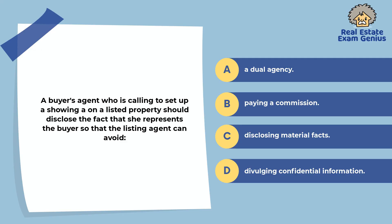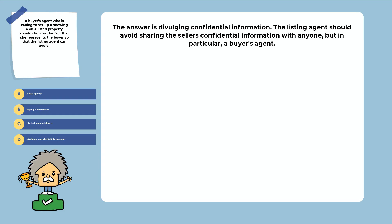A buyer's agent who is calling to set up a showing on a listed property should disclose the fact that she represents the buyer so that the listing agent can avoid: a dual agency, paying a commission, disclosing material facts, or divulging confidential information. The answer is divulging confidential information. The listing agent should avoid sharing the seller's confidential information with anyone, but in particular, a buyer's agent.